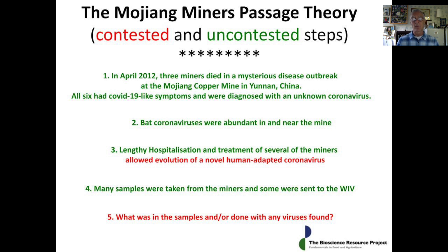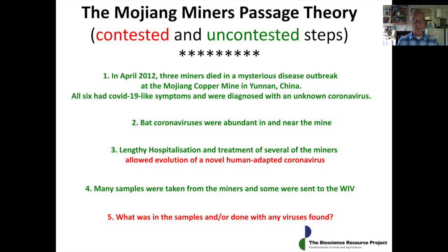We know the miners underwent a lengthy hospitalization; at least two of them were sick for about six months. Our proposal is that this lengthy hospitalization and illness allowed the evolution of a novel human-adapted coronavirus from the bat viruses to which they were exposed. We also know that many medical samples were taken from the miners and some were sent to the Wuhan Institute of Virology, so a key question becomes: what was in the samples and what was done with any viruses found? This outbreak caused a lot of consternation and interest in China, partly because it validated WIV's theories on viruses jumping from bats into people, making it a high priority research subject.